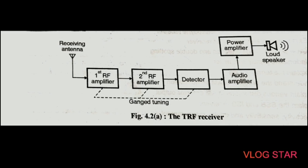In order to receive the wanted signal, the receiver must perform the following functions: first, select the desired signal from all other unwanted signals; second, amplify that desired signal; third, demodulate the amplified signal — that is, perform demodulation, which is the opposite of modulation. After demodulation the original modulating signal is obtained, which must be amplified, and finally applied to the loudspeaker.